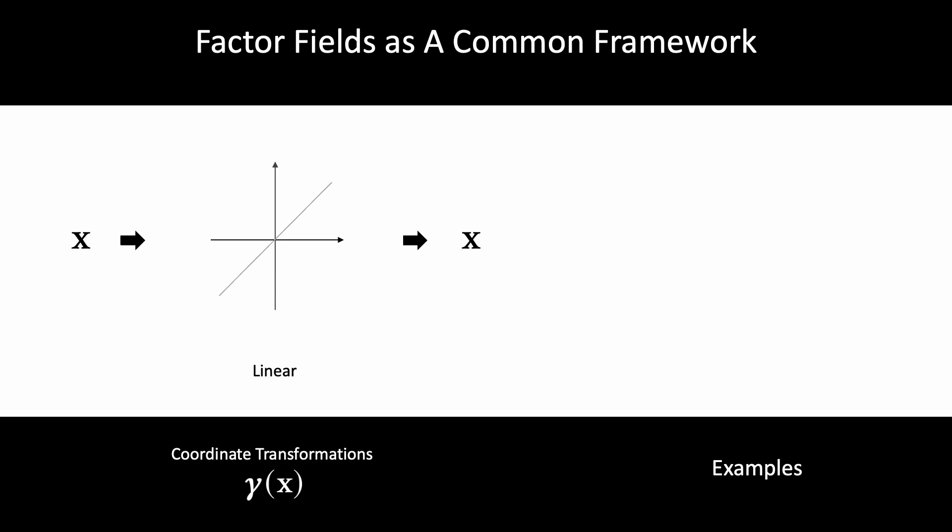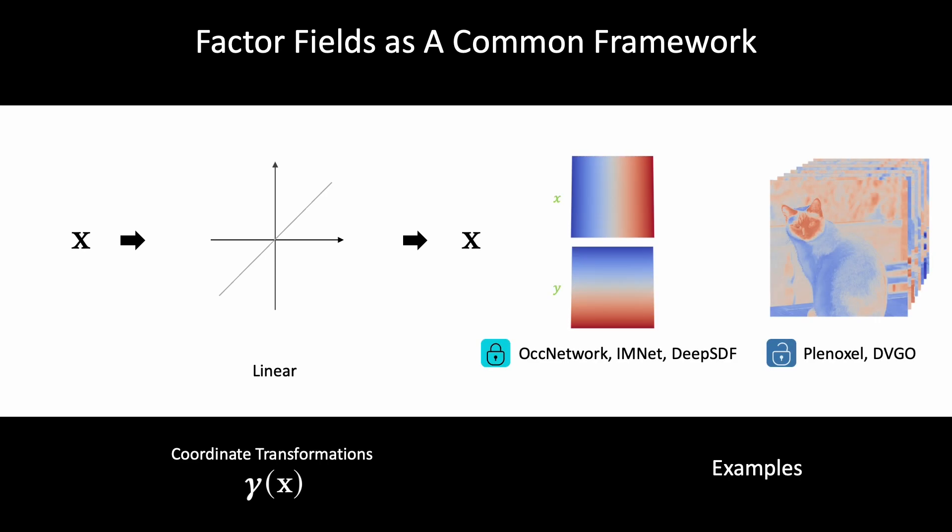An identity function, γ(x) = x, is used for Ocnet and other earlier work of implicit representations since the coordinate varies freely over the signal domain.